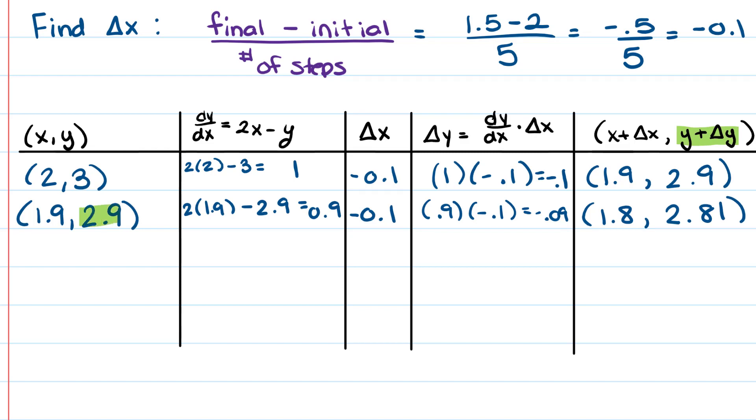So it's our y value, 2.9 plus delta y, which is negative 0.09. Okay, so our new coordinate is (1.8, 2.81).